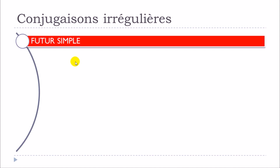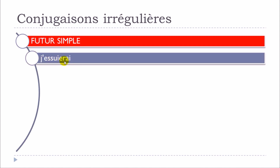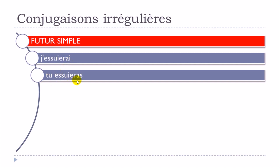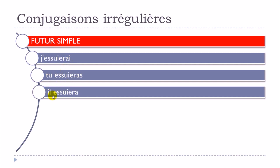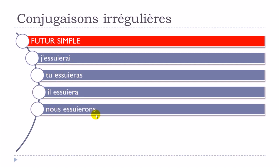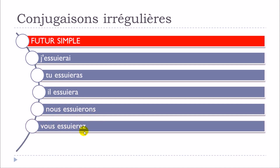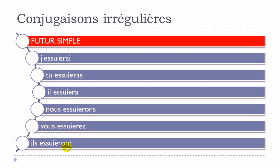Let's see now le futur simple. J'essuierai, tu essuieras, il essuiera, nous essuierons, vous essuierez, ils essuieront. You can see that this Y is changed and modified — it will be replaced by I. For the futur simple, it does concern all the forms: je, tu, il, elle, nous, vous, ils, elles.